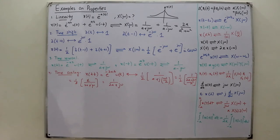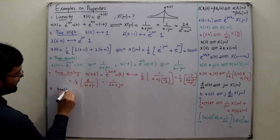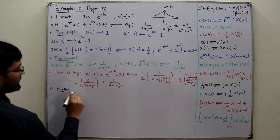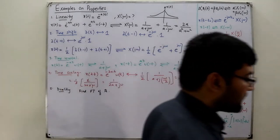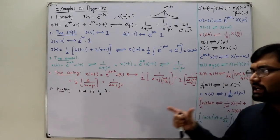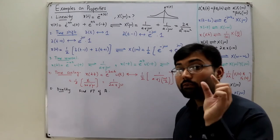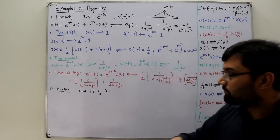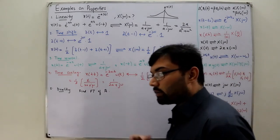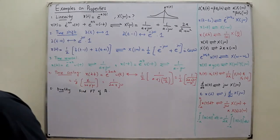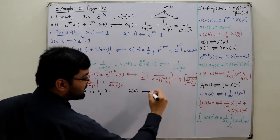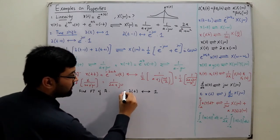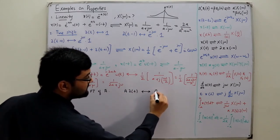The fifth property is duality. If asked to find the Fourier transform of a DC signal A, we look for a Fourier transform pair where the Fourier transform side is a constant. We recall that δ(t) has Fourier transform 1. So A·δ(t) has Fourier transform A. Now applying duality: if A is in the time domain, we look at the corresponding transform pair.